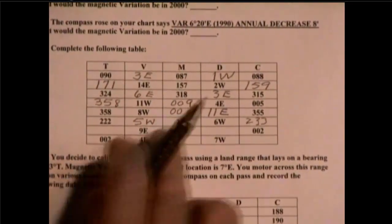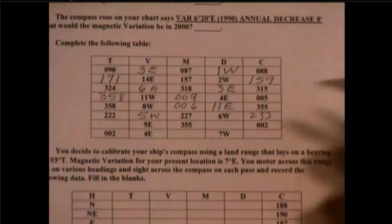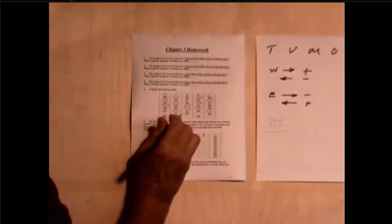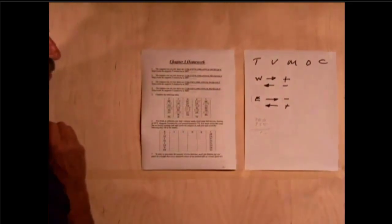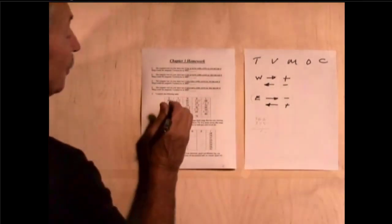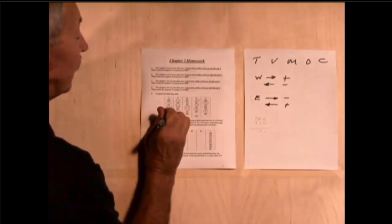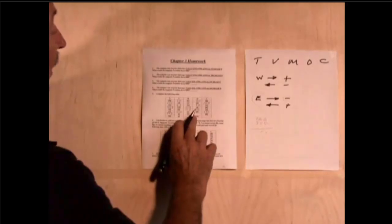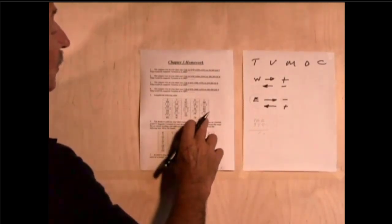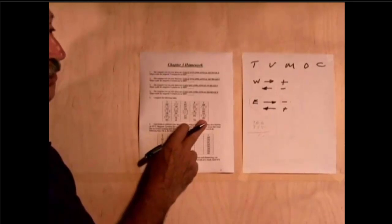355, 9 east is going to be plus going this way. So, this is going to be 355 plus 9 is 364 or 004. And here we have 355 to 002 is 362. Minus 355 is 7.